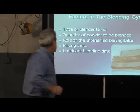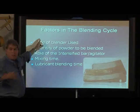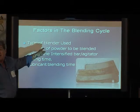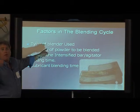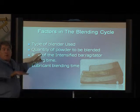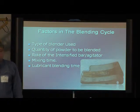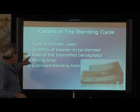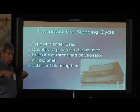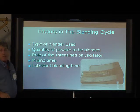The type of blender used matters. In the final blend cycle, I can use a blender to overblend powders — I need to be careful not to overblend and not to underblend. I need to make sure to have the right quantity of powder in the blender, and I need to understand the role of the intensifier bar — I'll show you pictures of that in just a second. I need to understand my mix time.